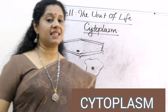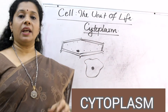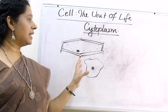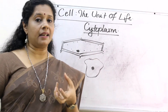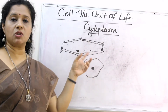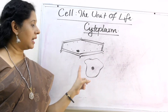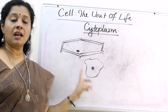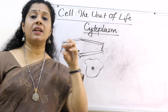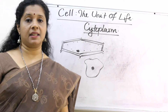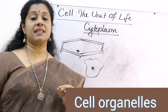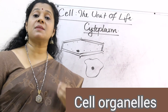Now let us look at the third part: cytoplasm. If you observe a plant cell like an onion cell or an animal cell, you can see a large region that is less stained, appearing colorless. That fluid region enclosed by the plasma membrane is called the cytoplasm. Within it there are several compartments or functional units called cell organelles, which carry out various functions of the cell.